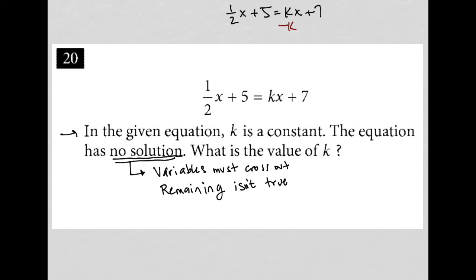But I wanted to subtract kx from both sides, and subtract 5 from both sides, which is technically what we would do in order to solve for x, then I'd be left with 1 half x minus kx equals 2.